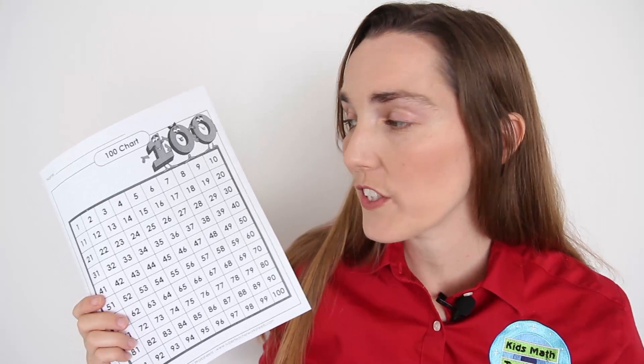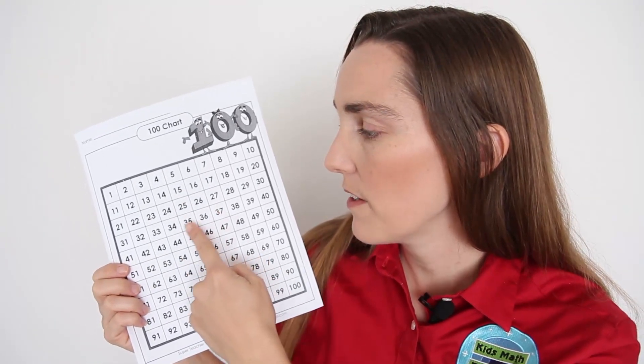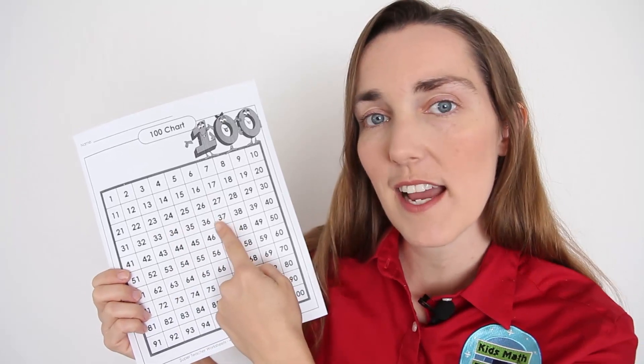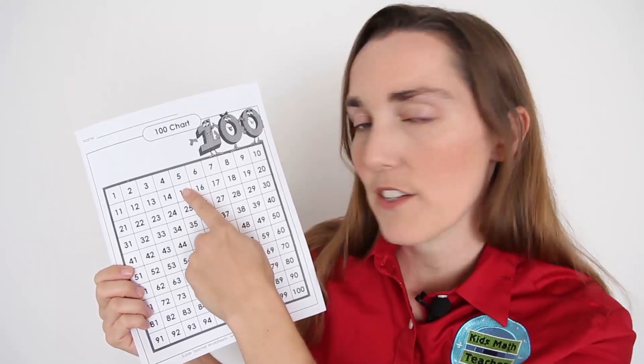One of the activities you can do with your number chart is picking a number and seeing the numbers above, below, and the different sides. And talking with your children about their orientation and how much more or less they are.